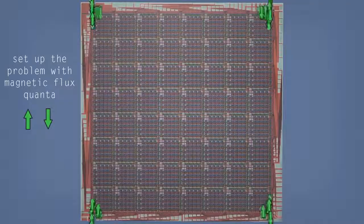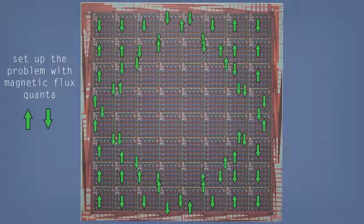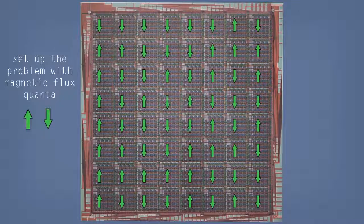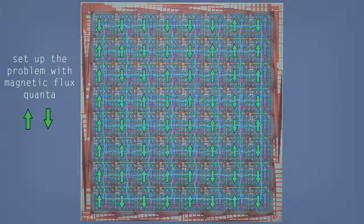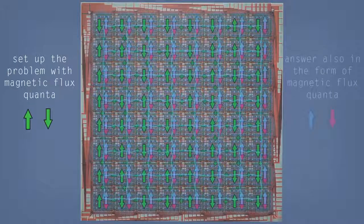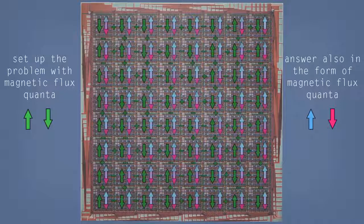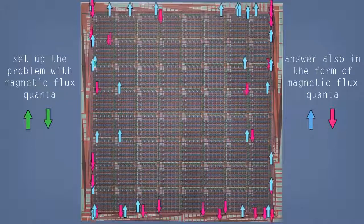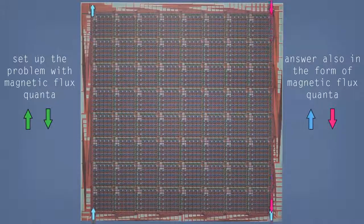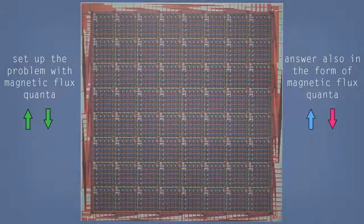When we're programming the processor, we load hundreds of thousands of these flux quanta into the chip, into various circuits. Then the processor undergoes this algorithm, quantum annealing, which is how it solves the problem that we've posed to it. At the end of that, the answer is in the form also of magnetic flux quanta, which are then pulled out of the processor to the four corners, and then up into the room temperature electronics, and onto our conventional computer.